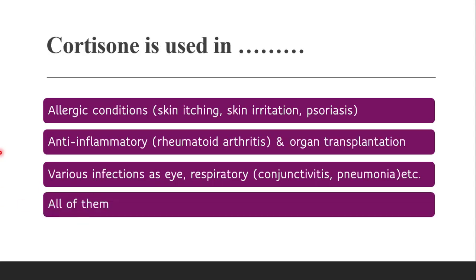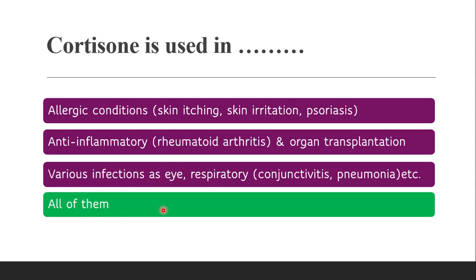Next question: cortisone is used in — whether it is used in allergic conditions, as an anti-inflammatory in rheumatoid arthritis, in organ transplantation as an immunosuppressive agent (to prevent organ rejection), or in various infections such as eye and respiratory tract infections. The correct answer is all of them. Further details about cortisone's uses can be found in the theory lectures.